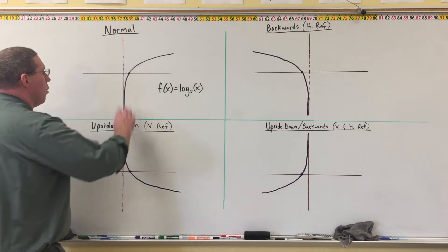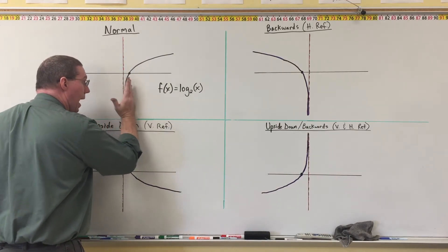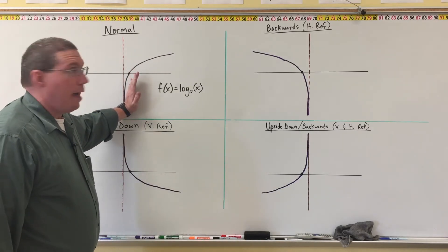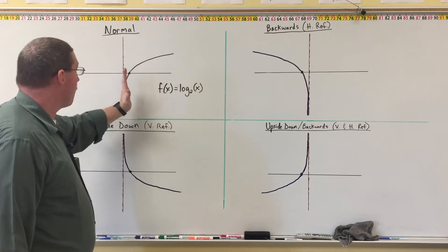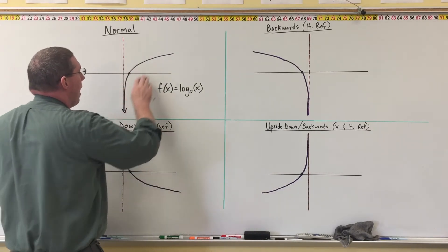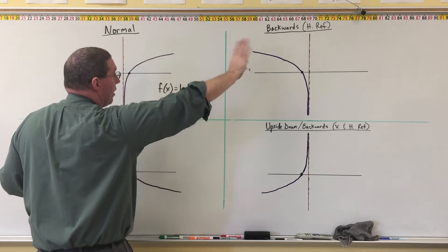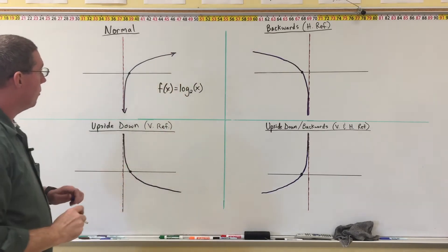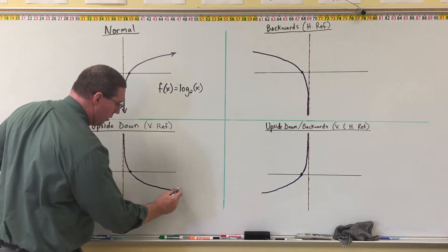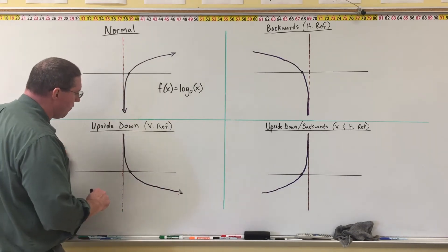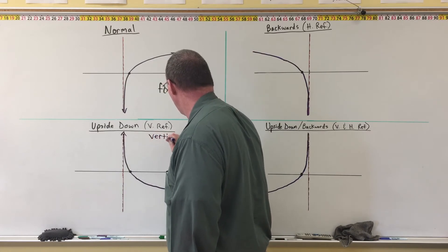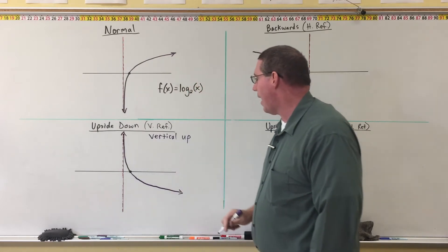Alright, so look. The original function starts out vertical down and then comes up and flattens out to the right. So if it's not vertical down and flattening to the right, it is not normal. But if it is vertical downward and flattens to the right — there's a down arrow along the asymptote and it flattens out, continuing to increase but getting flatter to the right. Well, what does upside down look like? Upside down still gets flatter to the right, but the big difference is that instead of going vertical down, it goes vertical up.